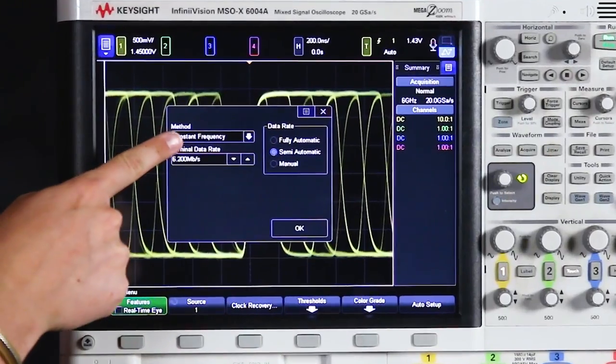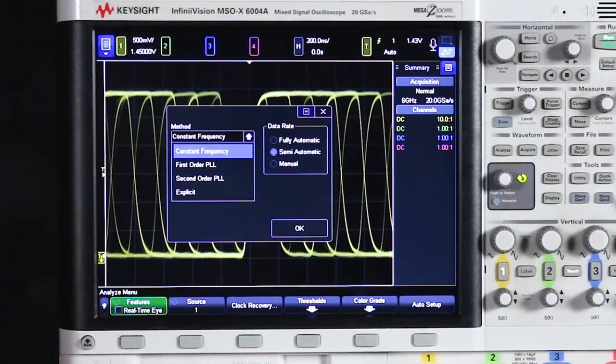And we can also see there are a few different methods of clock recovery as well. So there's constant frequency, first order and second order PLL, and explicit.